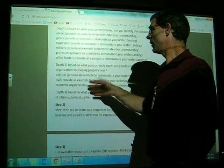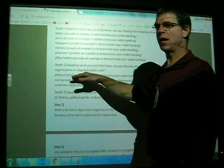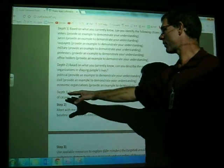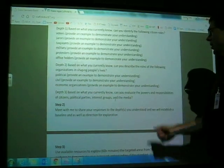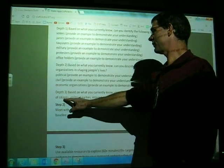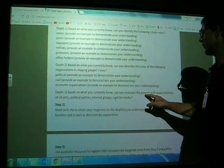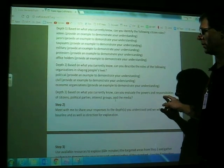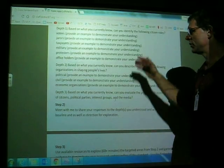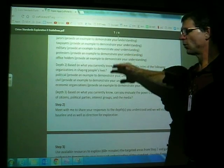But if you do, give me a quick description. If you don't, then you figure out, okay, I knew all these, but I'm in trouble here. I don't know what this is. If you've got that mastered, you're going to go down to Depth 3. Based on what you currently know, can you evaluate the powers and responsibilities of citizens, political parties, interest groups, and the media? What kind of powers do they have? What kind of responsibilities? And so, again, with the baseline, your goal is just to show me how much you already know, and then we'll decide, okay, that's where you should begin.